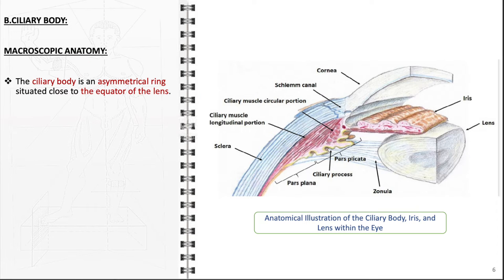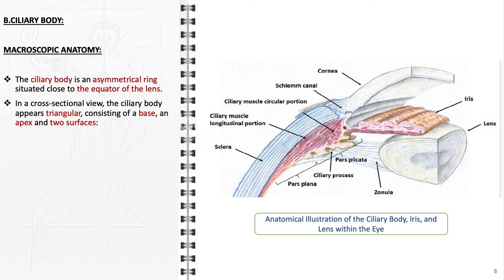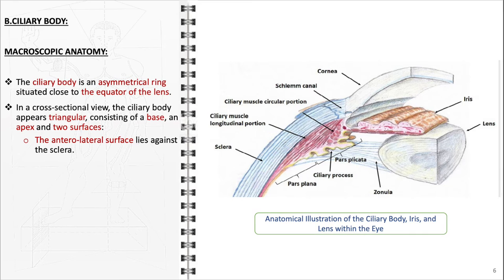Concerning its macroscopic anatomy, the ciliary body is an asymmetrical ring-like structure situated adjacent to the lens equator. When viewed in cross-section, the ciliary body presents a triangular shape defined by a base, an apex, and two distinct surfaces: the anterolateral surface, which is in close contact with the sclera.